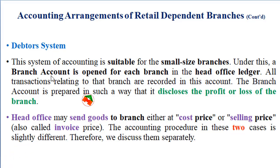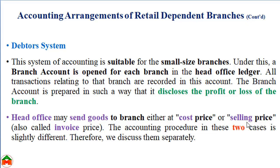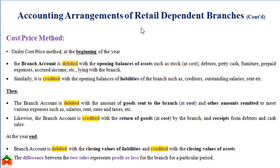Under the debtor system, a branch account is opened for each branch in the head office ledger and all transactions related to the branch are recorded in this account. The branch account is prepared in such a way that it discloses the profit and loss of the branch. The head office sends goods to the branch either at cost price or selling price — the selling price is also known as invoice price. The accounting for retail dependent branches can also be maintained by the cost price method.